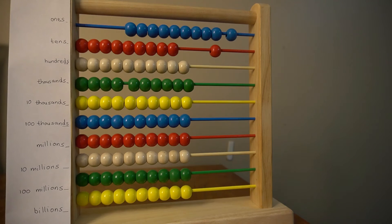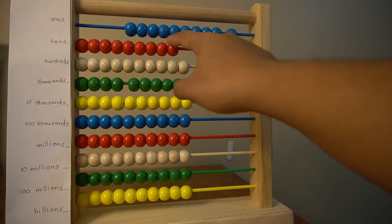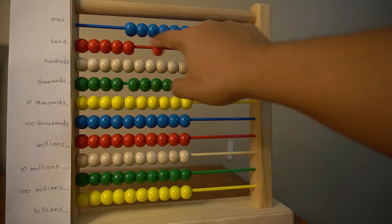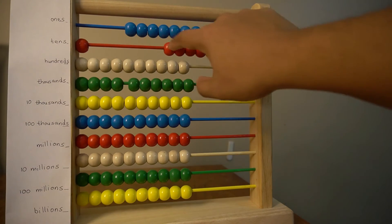So let's start counting the red beads. Ten, twenty, thirty, forty, fifty, sixty, seventy, eighty, ninety, hundred.